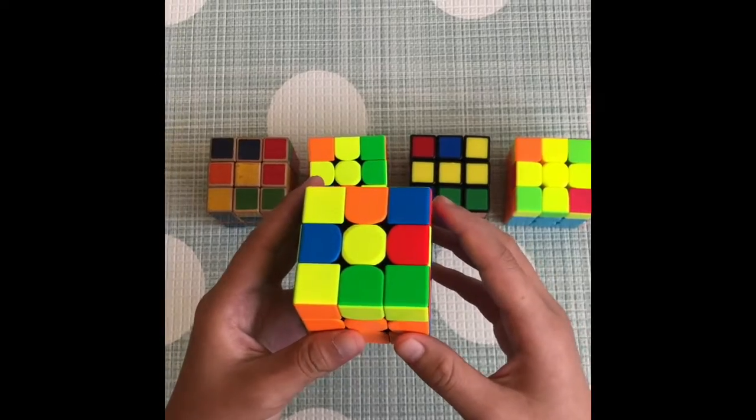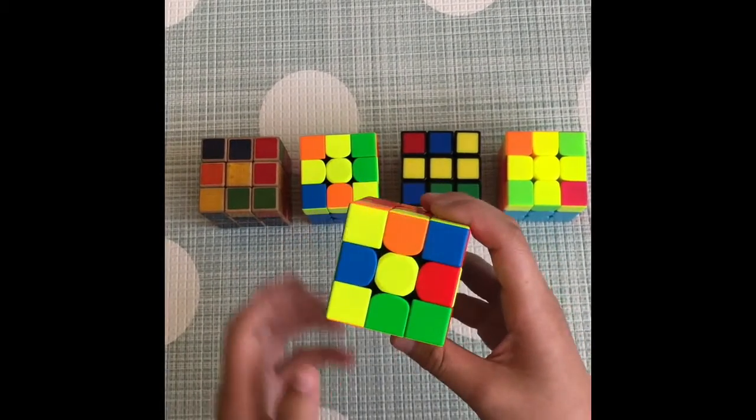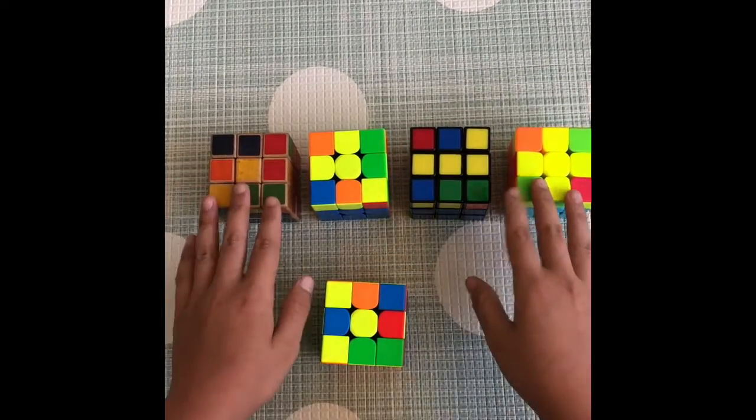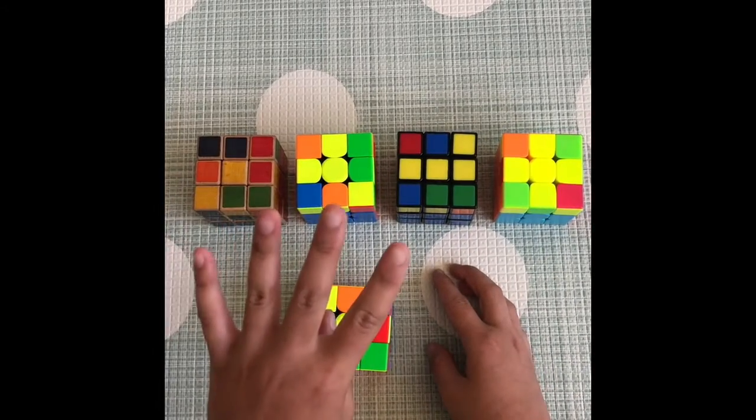So let's get into it. First thing you want to do is see what state your cube is in. In this case, my cube only has this yellow center here. Above here I'm showing you the four stages that your cube could be in.